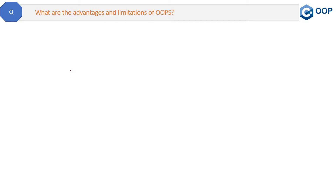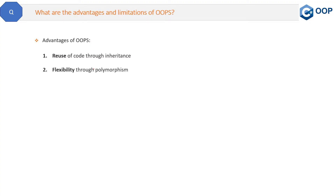Inheritance, polymorphism, encapsulation, and abstraction — what are their advantages? Let's see a few of them. The first advantage is reuse of code through inheritance. By creating a single base class and multiple derived classes from it, you can avoid code duplication and reuse the base class code in multiple derived classes.